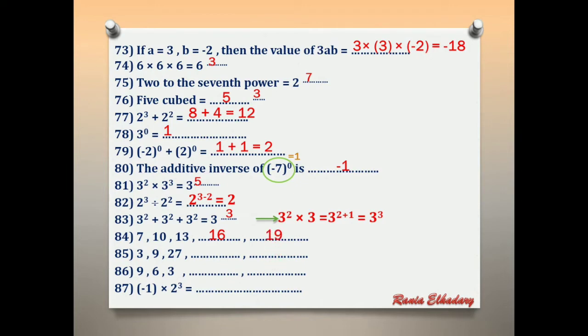Number 85: 3, 9, 27 — we multiply by 3 each time. 3×3=9, 9×3=27, 27×3=81, 81×3=243.